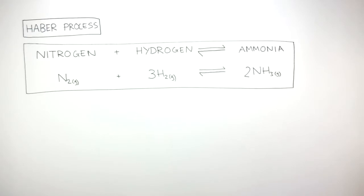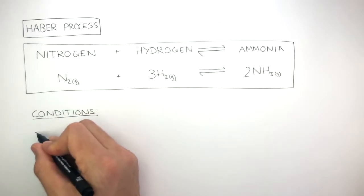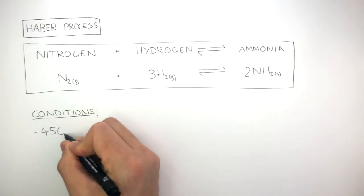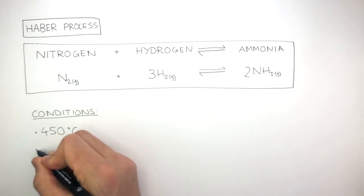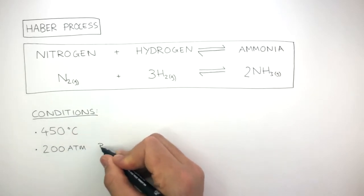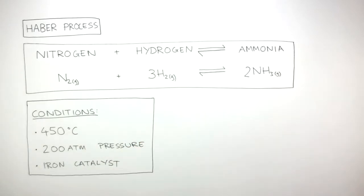This is the balanced symbol equation. The conditions in the Haber process are a temperature of 450 degrees Celsius, 200 atmosphere pressure, and an iron catalyst is used.